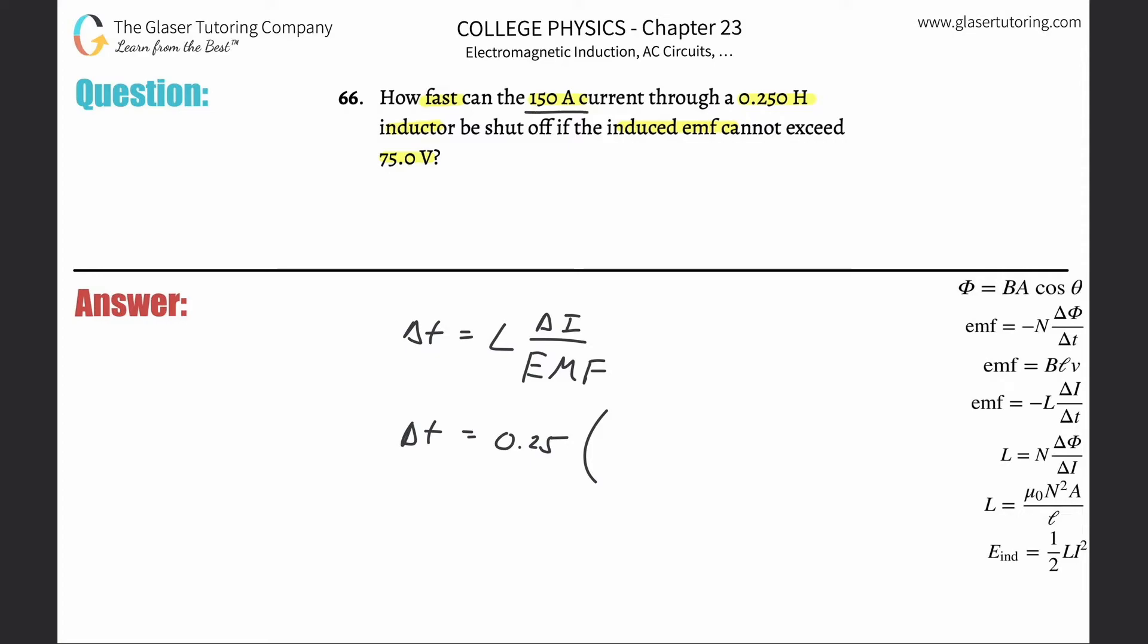So it says here's the current and it's going to be shut off. So if it starts at 150 and it ends at zero, what's the change? 150. Don't worry about the sign. The sign is just going to tell us direction. We're just interested in magnitudes here, divided then by the emf, and that's again 75.